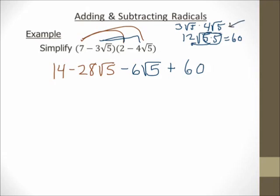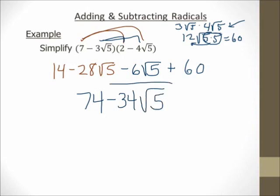So I add and subtract like terms. 14 plus 60 is 74. Negative 28 square root of 5 minus 6 square root of 5 is negative 34 square root of 5. Final answer: 74 minus 34 square root of 5.